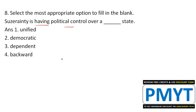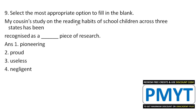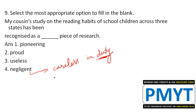Next, a polity-related word: a state dependent on another — not democratic, not unified, not backward — the answer relates to political control over a dependent state. Question nine: 'My cousin's study on reading habits of school children across three states has been recognized as a ___ piece of research.' Options: proud, useless, negligent (meaning careless in duty — negative). A positive word is needed, so the correct answer is 'pioneering,' meaning one who initiates or begins something.